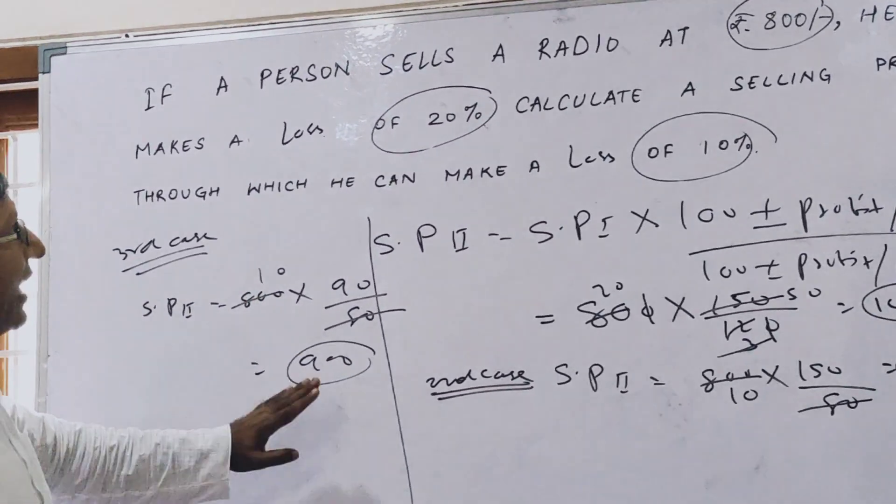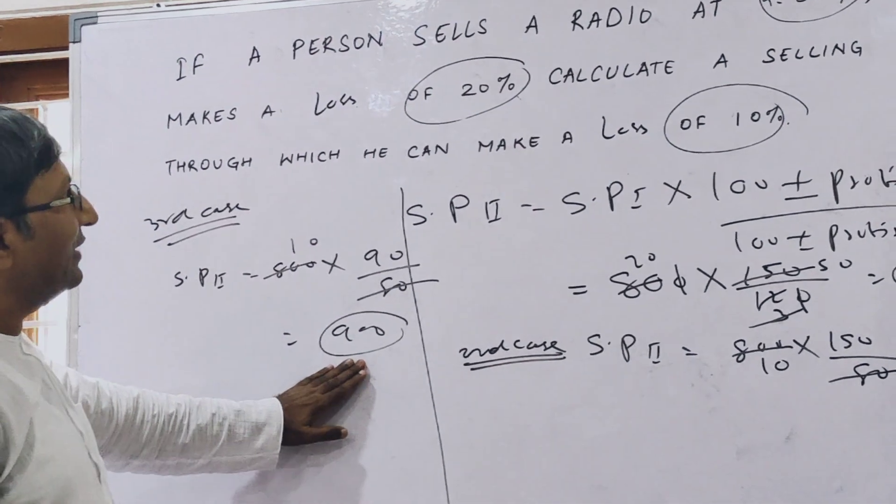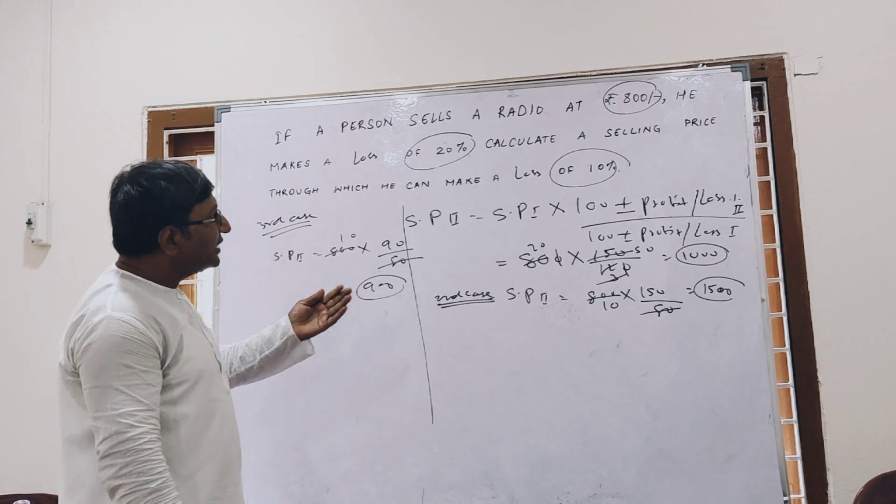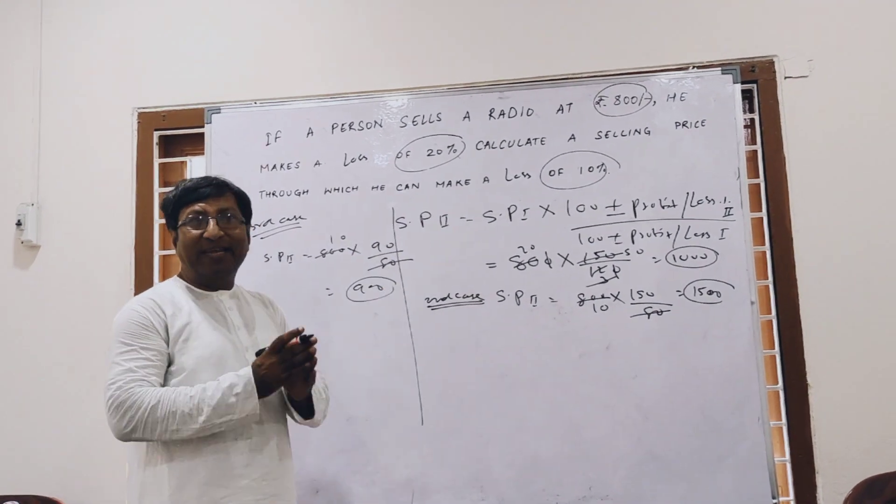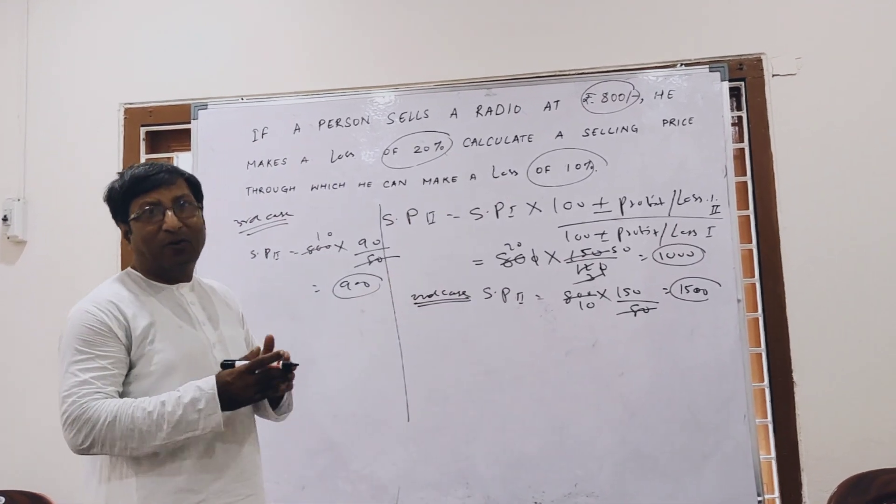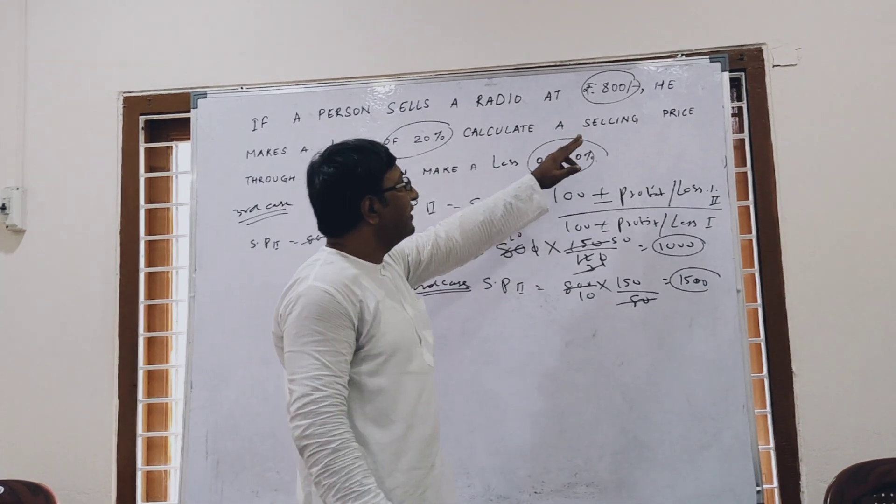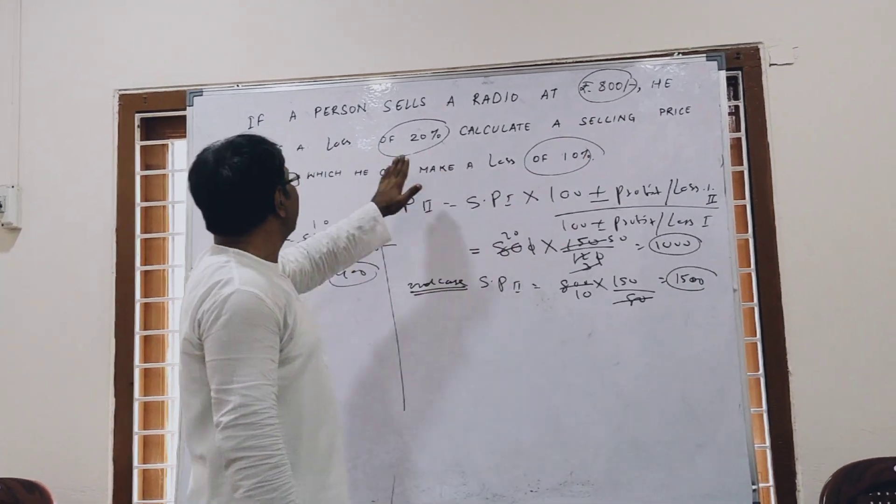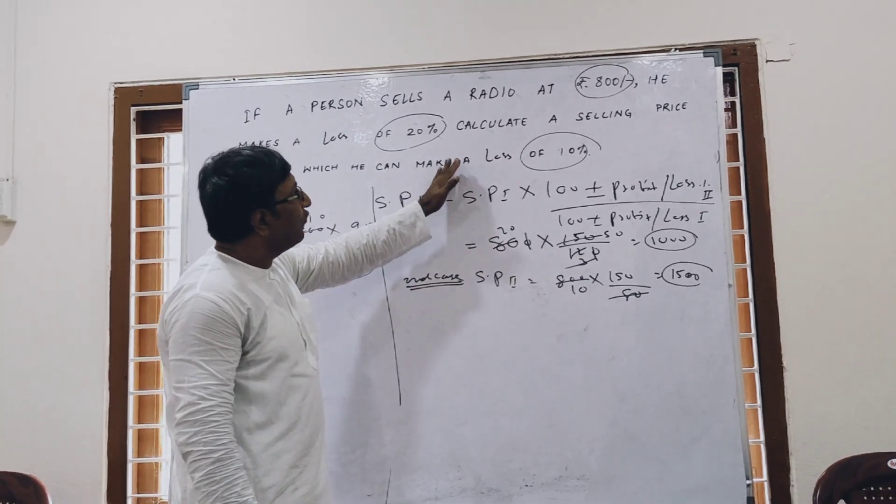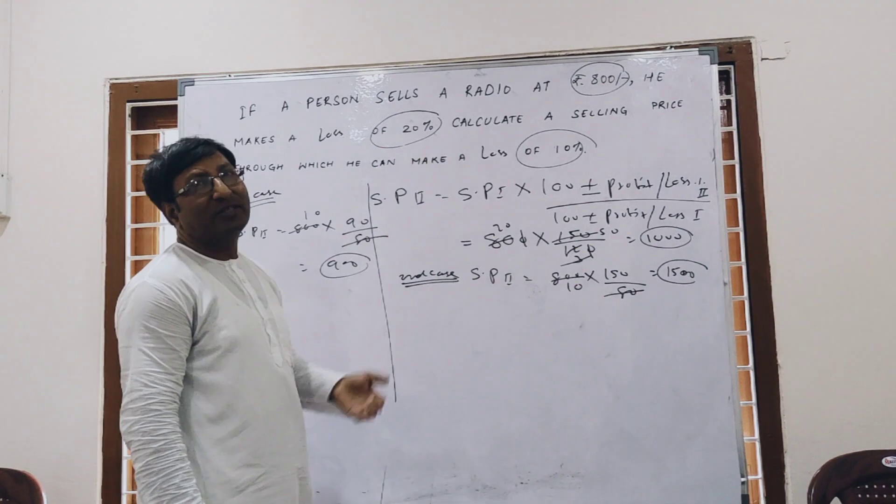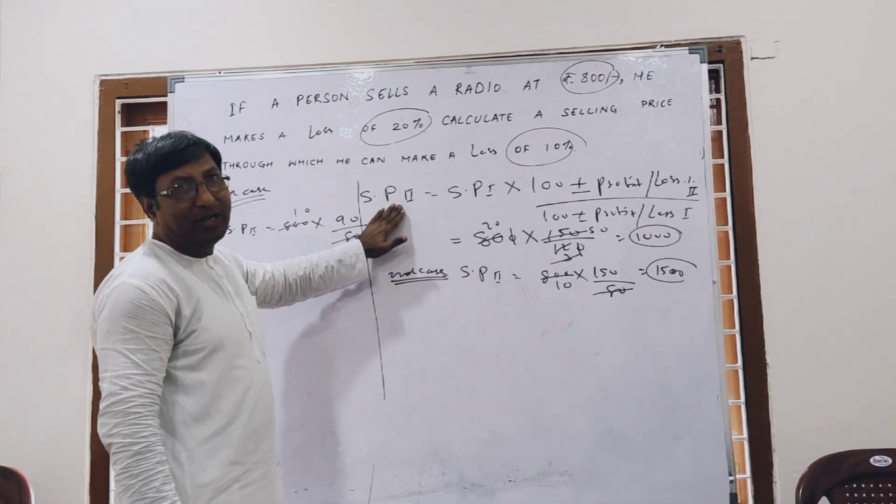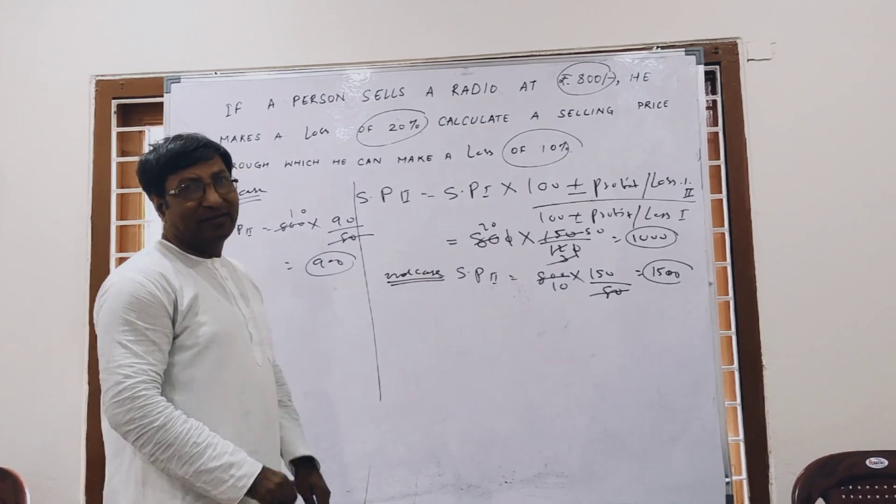If he will sell his radio at 900, then he will get only a loss of 10%. In this way you can find this type of question very easily. If you solve this question by the basic rule, it will take you a lot of time, because first you have to find the cost price from the selling price and loss. Then for the second case you find the cost price, then you can find your selling price. With the help of this tricky formula you can find your answer easily. Thank you.